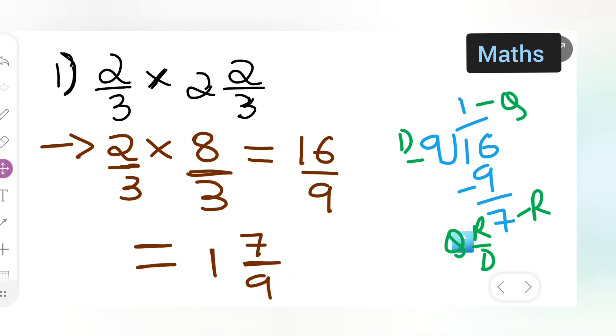Your final answer is 1 7/9. Here, quotient is 1. Replace this. Then, our remainder is 7 over here. R is 7 and your D is 9.